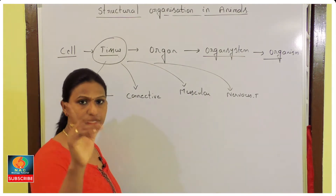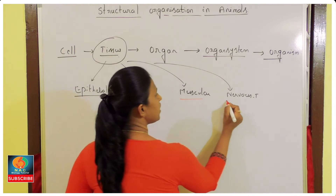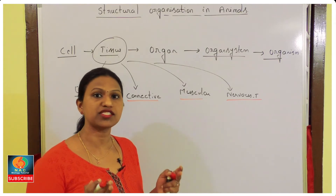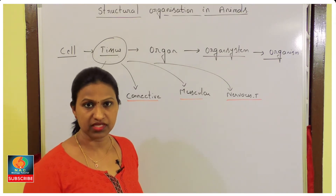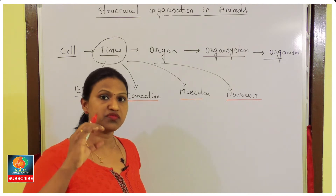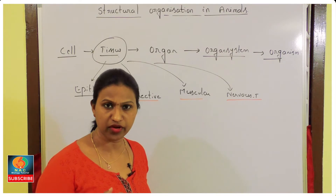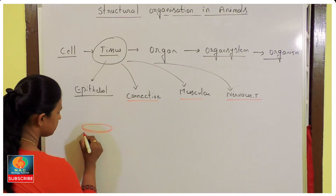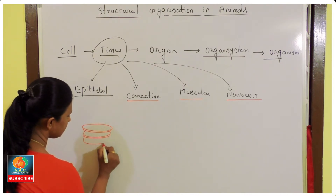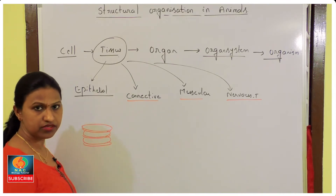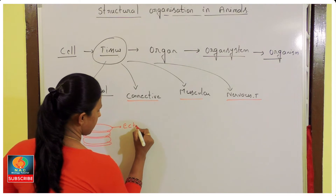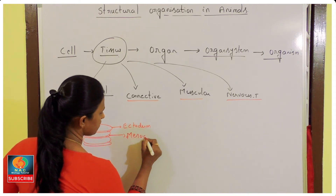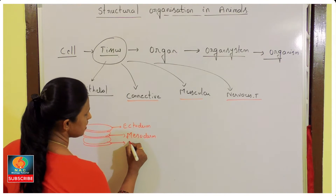There is one neat question here. As we know, when we were in an embryonic condition — still in our mother's womb — our body is made of embryonic layers. In human reproduction there are three germ layers: the outer layer is ectoderm, the middle layer is mesoderm, and the innermost layer is endoderm.